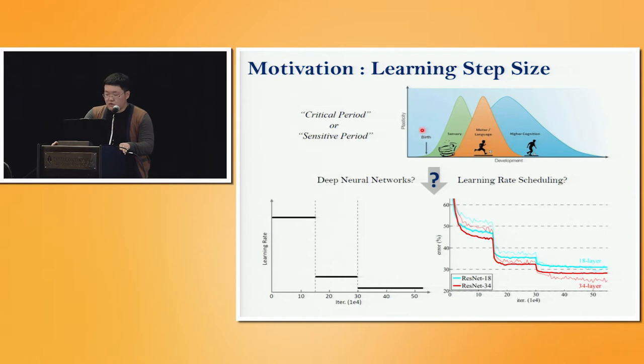It is known that a neuron has a peak-shaped plasticity curve which is called critical period or sensitive period. For example, in a group of neurons of a child, the ability to learn languages gradually increases, peaks at certain points, and gradually decreases.